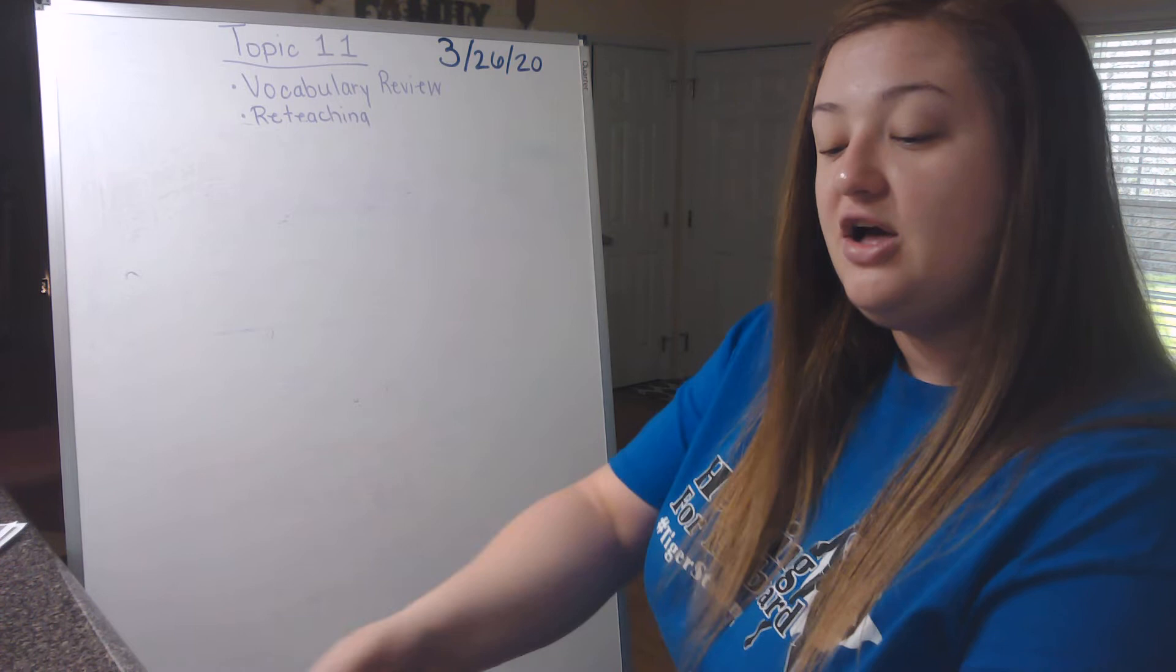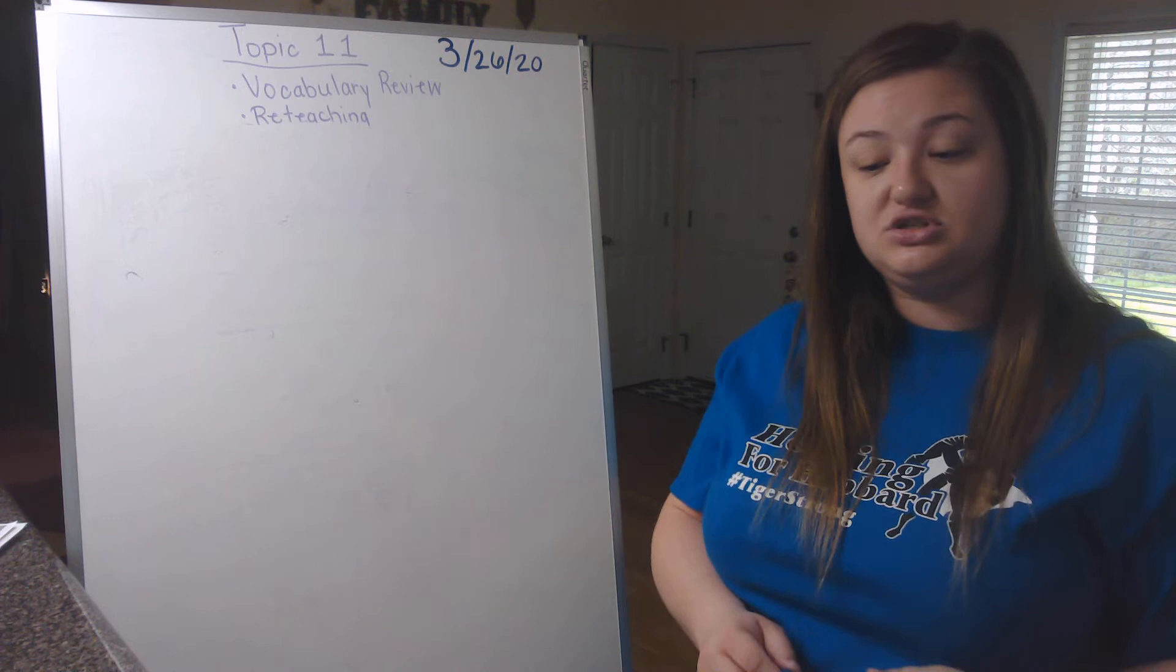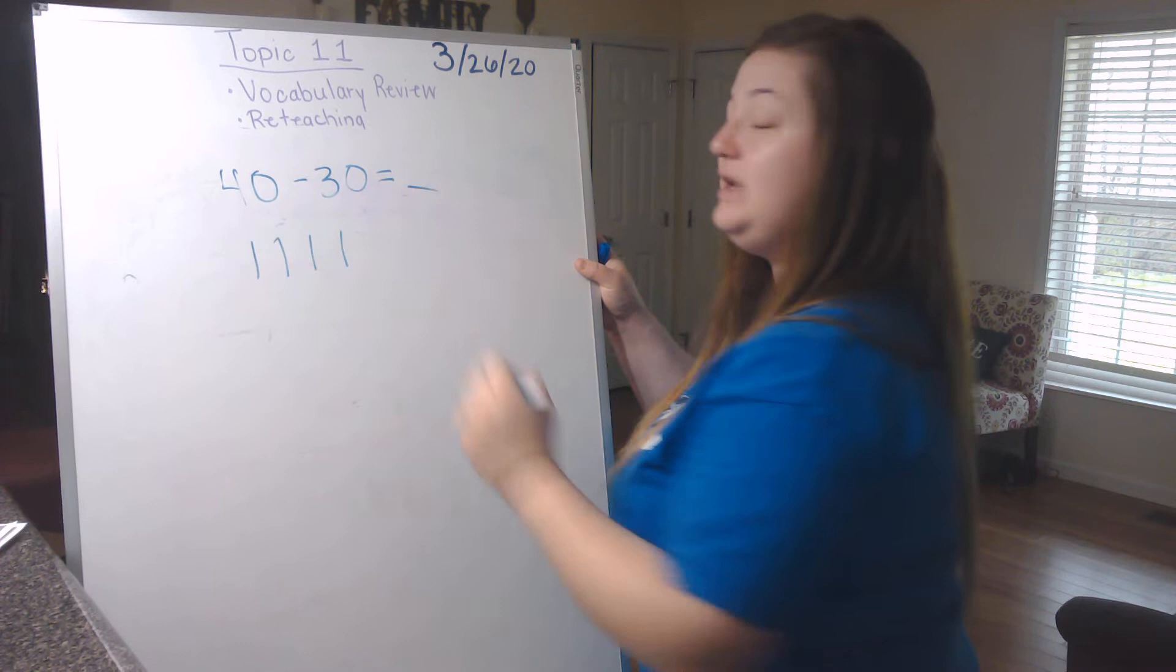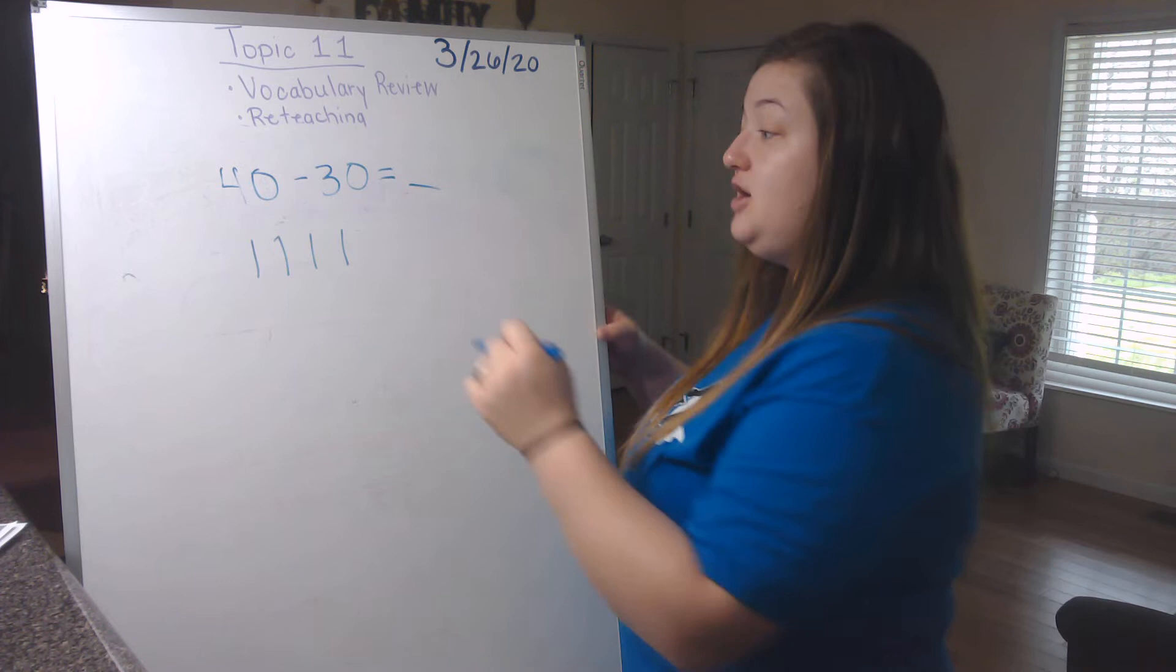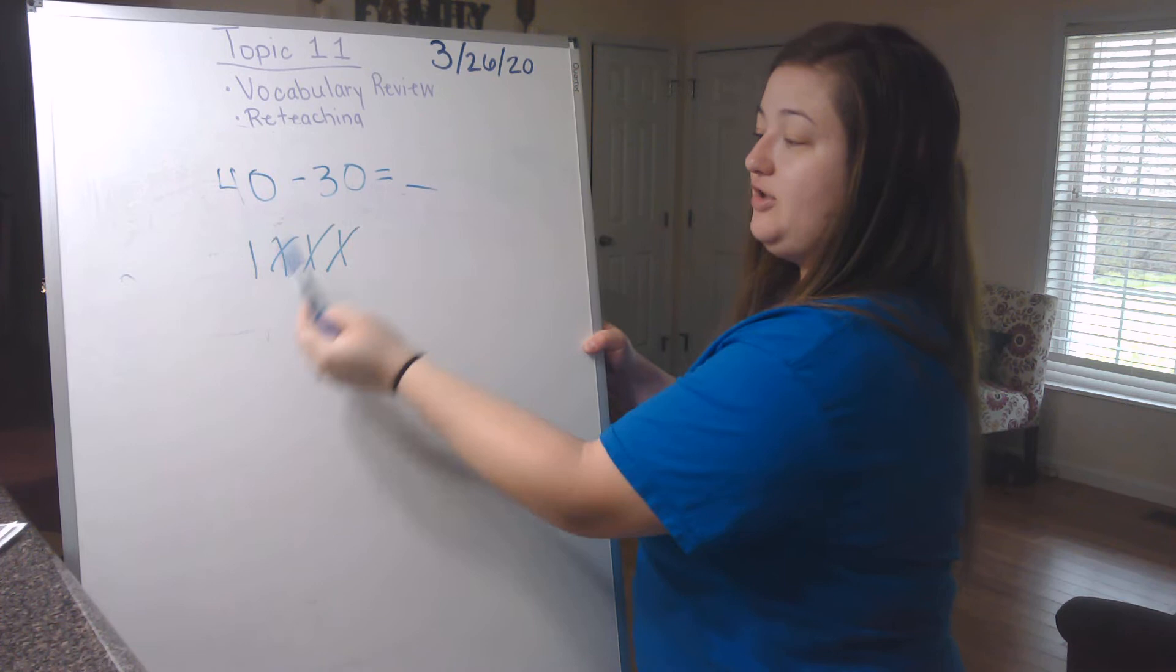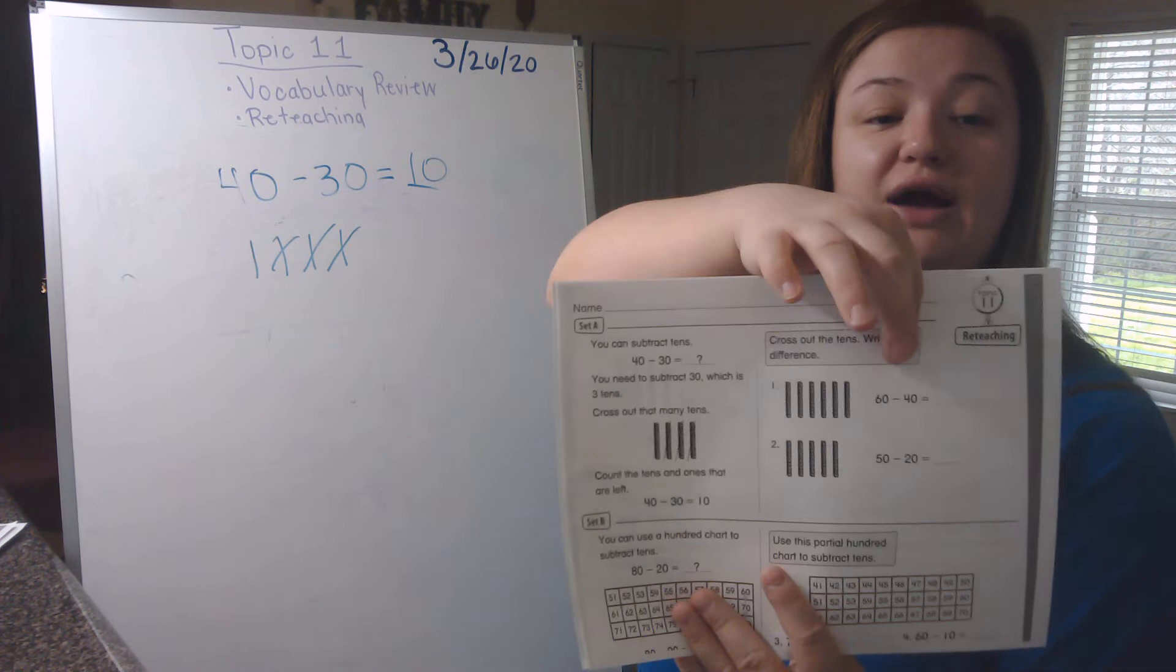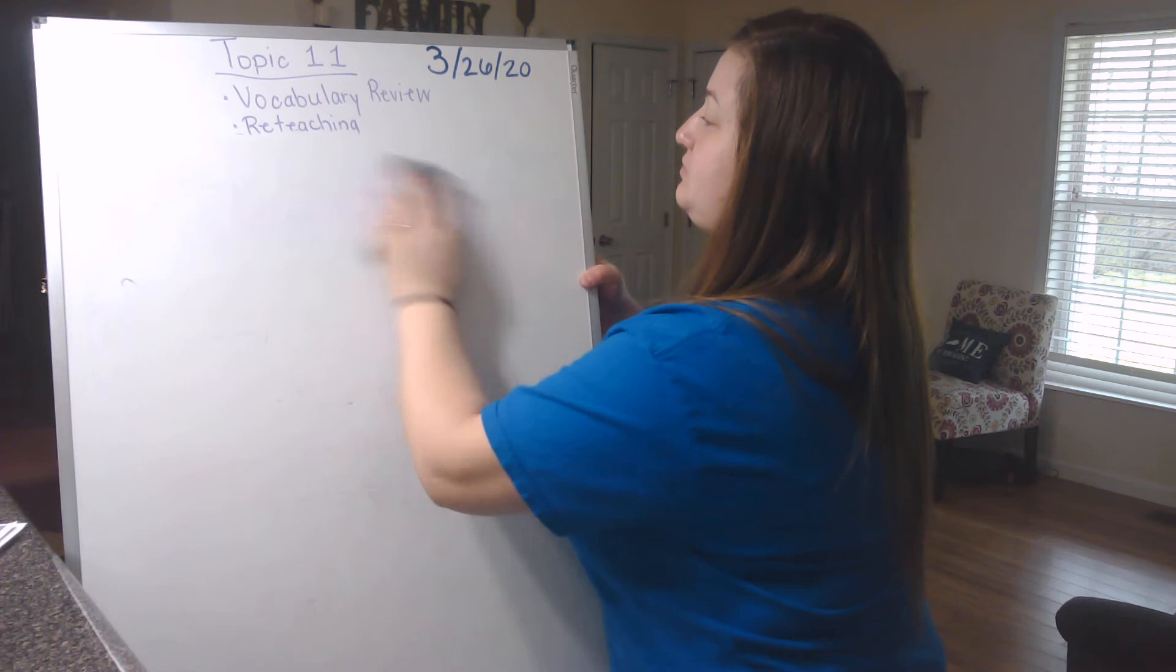Set A at the top says, you can subtract tens. So over here it says, you need to subtract 30, which is 3 tens. So we started with 40. So it says we need to subtract 30, which is 3 tens. So we're going to cross out 30, which will be 3 groups. So 1, 2, 3. 40 subtract 30 is 10. Numbers 1 and 2 to the right, so like this is the one we just did. To the right of that is numbers 1 and 2 in set A. That's what we're going to do right next.